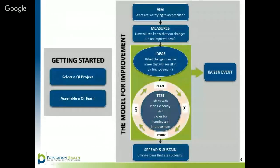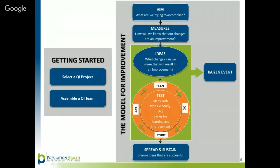Once your team has established the aim of your project, determined how you will measure improvements, and identified specific changes you want to make, the next step is to test the changes using the Plan-Do-Study-Act cycle, or PDSA cycle. The PDSA cycle allows your team to plan how you will test a change, try the change on a small scale, make observations about the results, and then take action based on what was learned — by adapting, adopting, or abandoning a change. Basically, the PDSA cycle is the scientific method used to rapidly learn and take action.